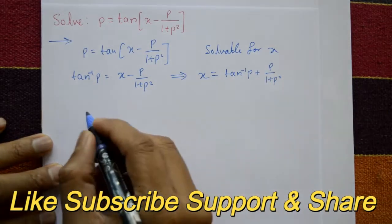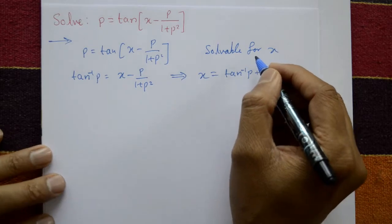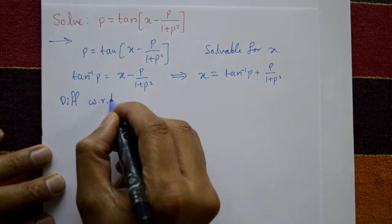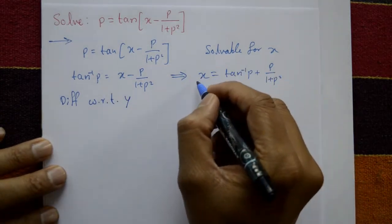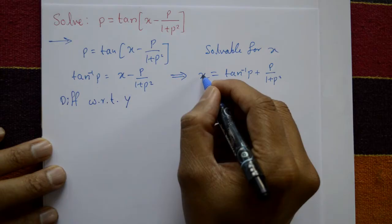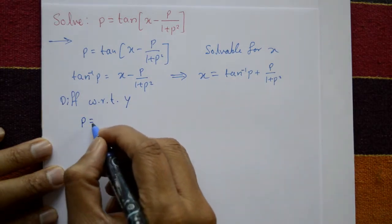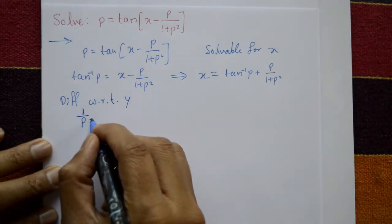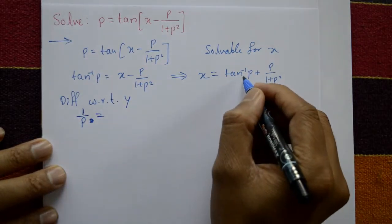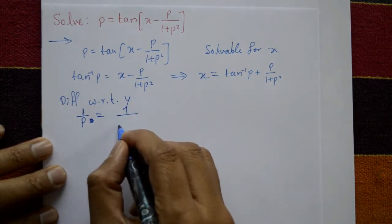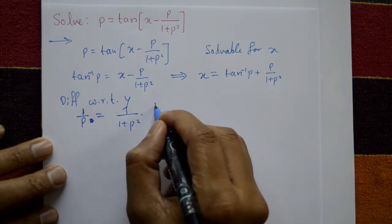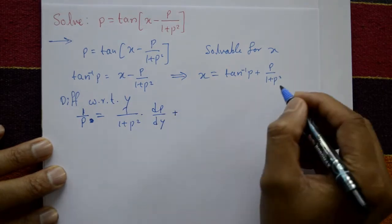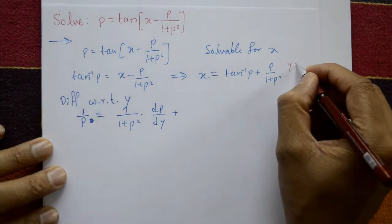Since it is solvable for x, differentiate with respect to y. dx/dy = 1/p. Differentiating x = tan⁻¹(p) + p/(1 + p²) with respect to y: the derivative of tan⁻¹(p) is 1/(1 + p²) times dp/dy, plus apply the quotient rule to the p/(1 + p²) part.